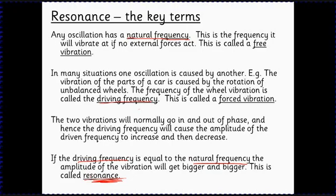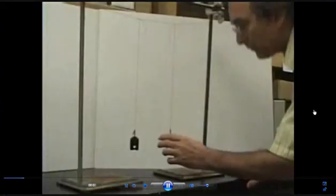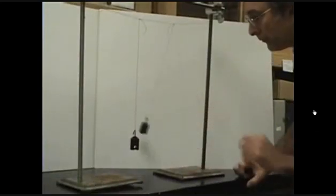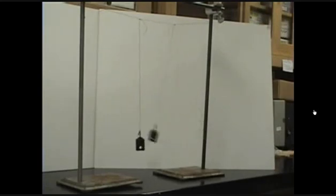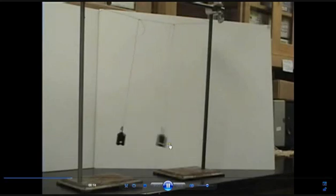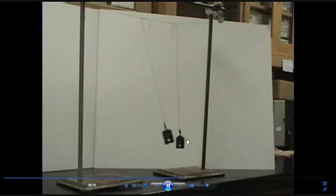Here's a video of a driven vibration: two pendulums hanging on a string. This one has been made to vibrate — that's the driving frequency — and here's the driven oscillation. You'll notice that energy has been transferred from the driver to the driven oscillation. This one is always behind the other one, because it's moving in the same direction that the other one is accelerating, making a pi-by-two phase difference.